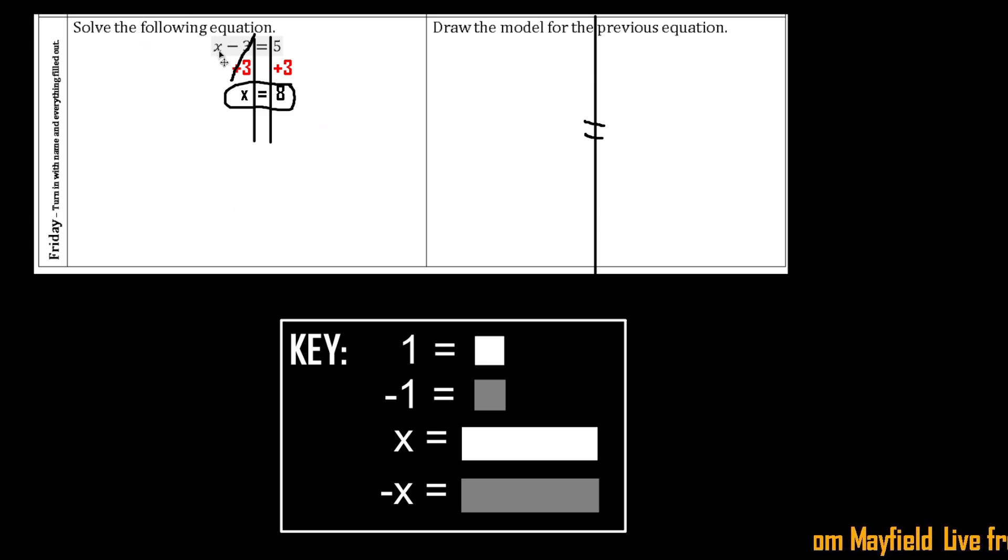What do we have on that left side? Well, we have 1 positive x and then we have 3 negatives. Again, using that key that is there provided for you. I kind of use the shaded ones for this one that way you can kind of do it with me as well. So again I have 3 negatives.